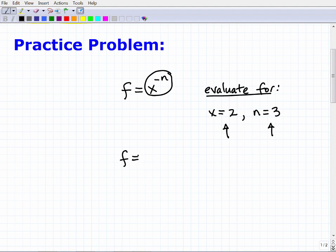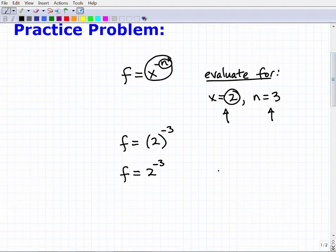Okay, so let's get to it. So f is going to be equal to x to the negative n power, but I'm saying x is going to be equal to 2. So I'm going to put a 2 here, and n, this little n up here, is 3. So this is going to be a negative 3. So basically we want to be looking at this expression here. f is equal to 2 to the negative third power.